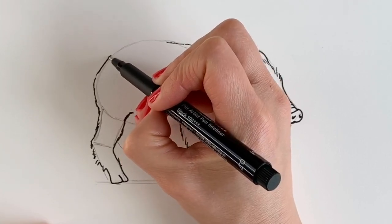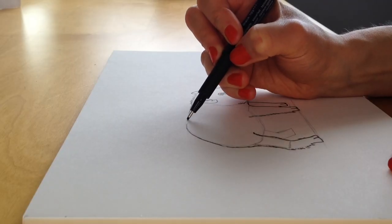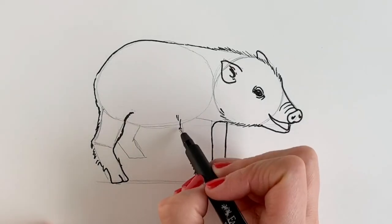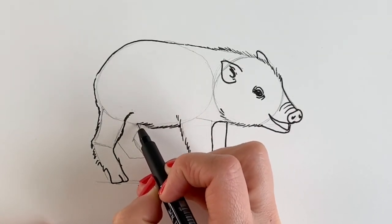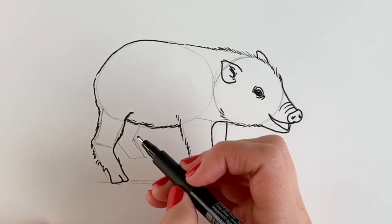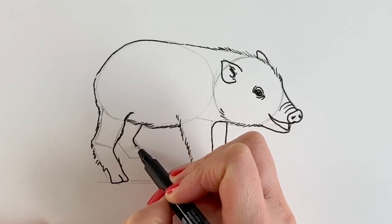And then for the tummy, again these furry lines. And then for the other little leg poking out from behind here.